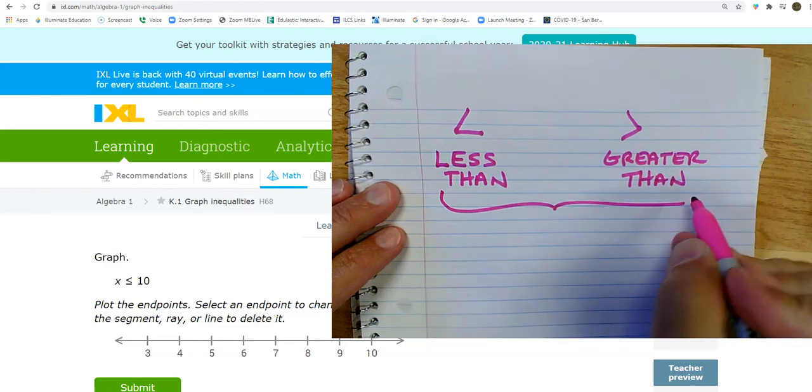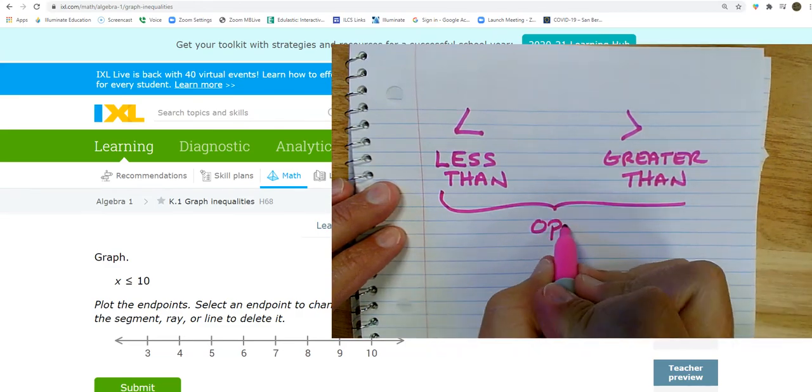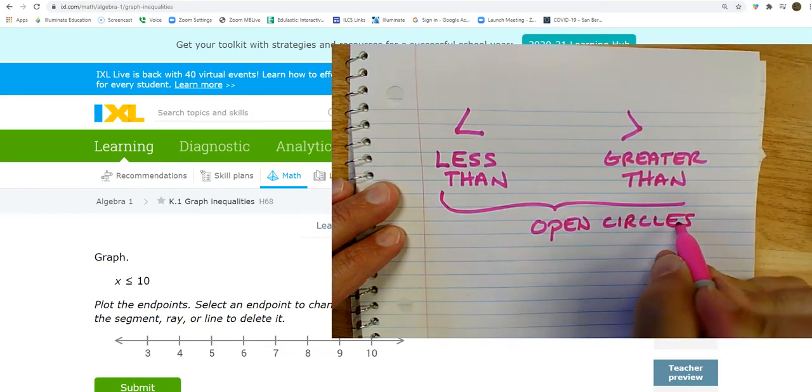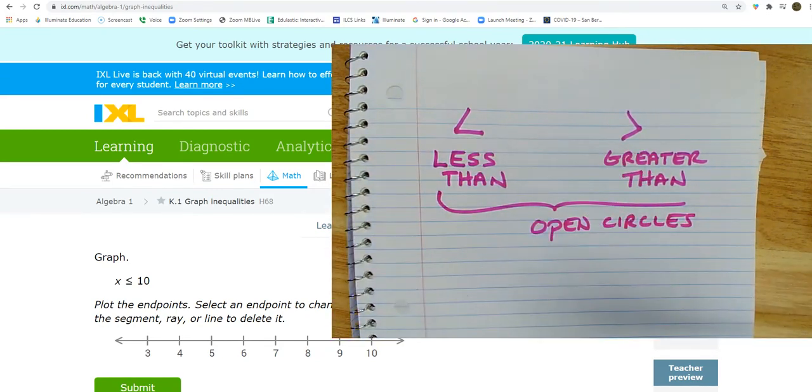And when we're graphing these, both of these are going to have what are called open circles. Which means when I'm looking at something like that, the number itself is not part of the solution.